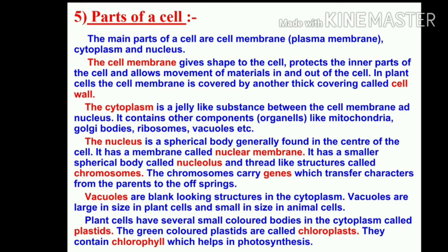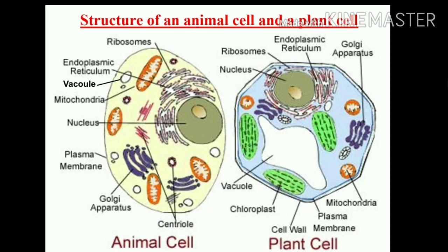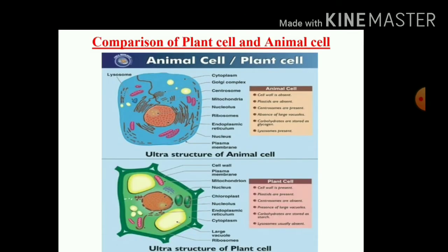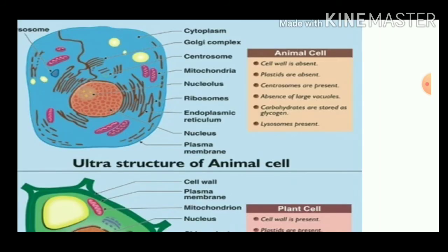Now we will observe and compare the structure of animal cell as well as the plant cell. You can observe here the presence of cell wall in a plant cell and the absence of cell wall in an animal cell. The vacuoles are big in size in plant cell and in animal cell the vacuoles are small in size. In animal cell: cell wall is absent, plastids are absent, chromosomes are present, large vacuole is absent, carbohydrates are stored as glycogen, and lysosomes are present.